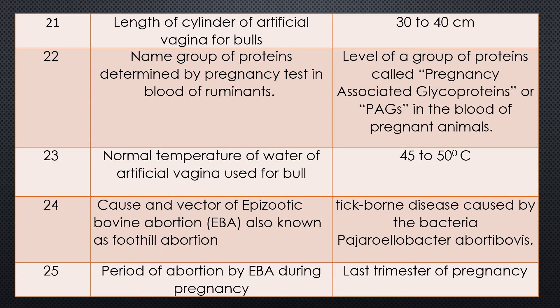Question 22. Name a group of proteins determined by pregnancy test in blood. Answer: the level of a group of proteins is determined, and those proteins are called pregnancy-associated glycoproteins, or in short, PAGs, in the blood of pregnant animals. Question 23. Normal temperature of water of artificial vagina used for bulls? Answer: 45 to 50 degrees centigrade.